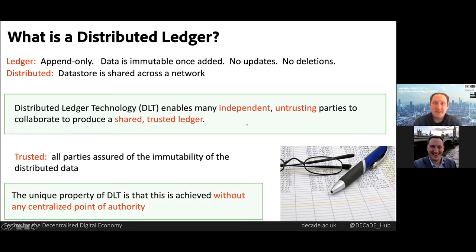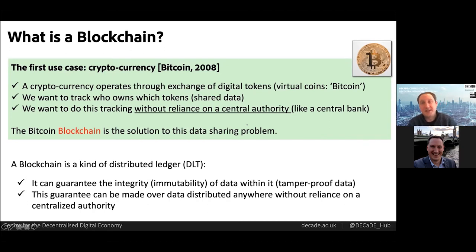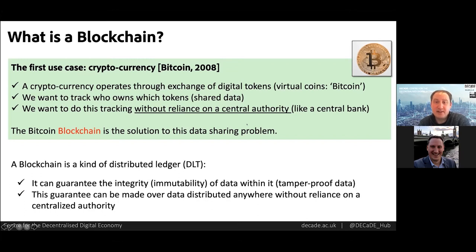Multiple independent organizations that don't trust one another can collaborate to produce a shared trusted data store. The first DLT blockchain was proposed in 2008 as the technology underpinning Bitcoin, a digital cryptocurrency whose unit — bitcoins — are digital tokens. Markets have emerged to create value around them, and the job of the DLT is to track who owns which tokens in a tamper-proof way, without recourse to any centralized authority like a central bank.